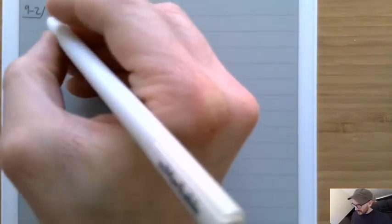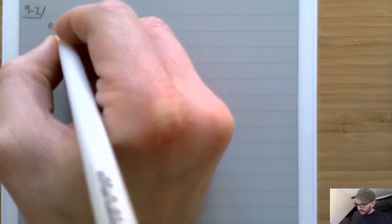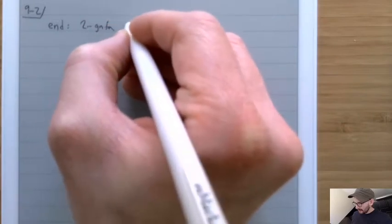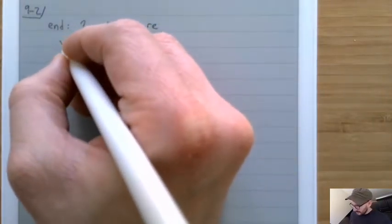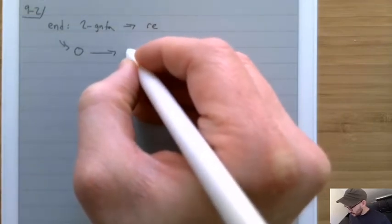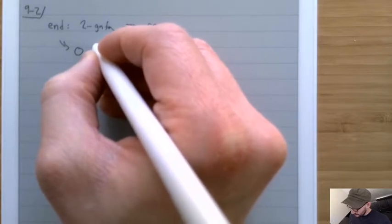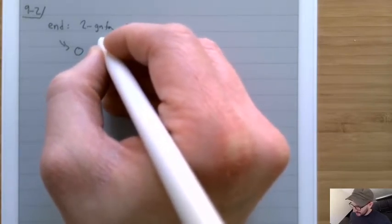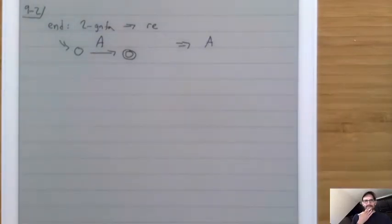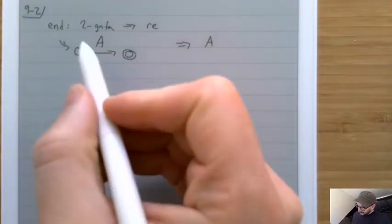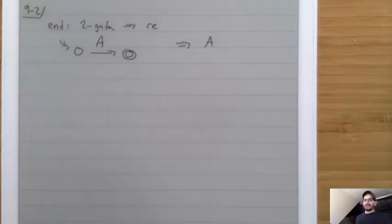Our end function is going to be extremely simple. What end is going to do is take a 2-state GNFA and return a regular expression. That 2-state GNFA is basically going to be a start state with an arrow to an end state with a label on it — we'll write the label as a big A. The result of calling end is just going to be exactly what that label is. This is why the rip function is set up the way it is.